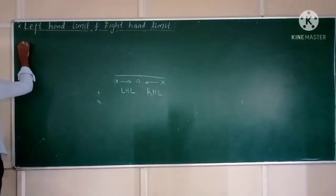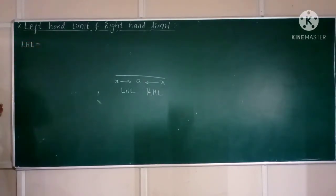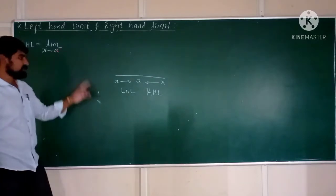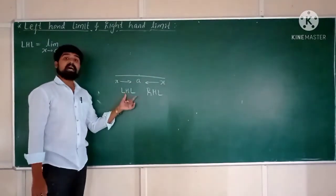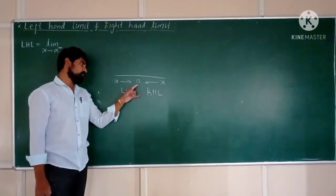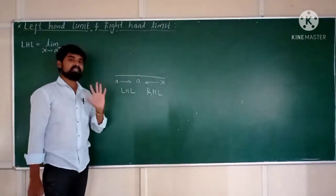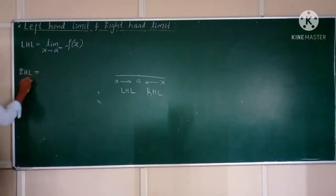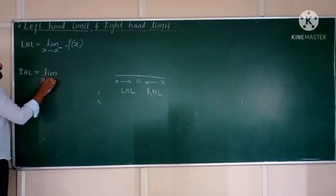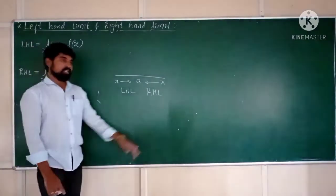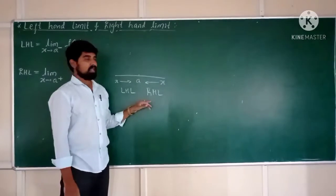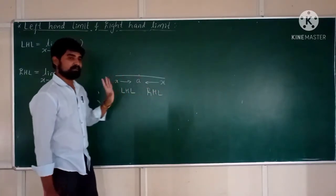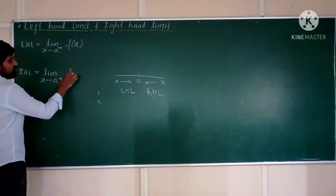Now, what is the definition of LHL and RHL? The definition of LHL is: limit x tends to A minus. This minus represents x is approaching to point A from its left side, so the value of x is less than A, for the function F(x). The definition of right-hand limit, RHL, is: limit x tends to A plus. This plus represents x is approaching to point A from its right side, so x is greater than A, for the function F(x).